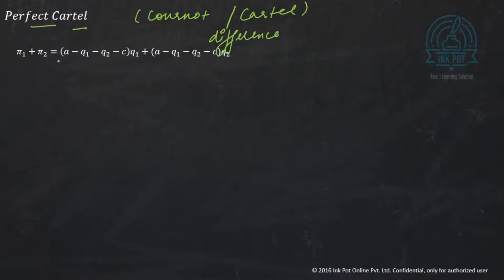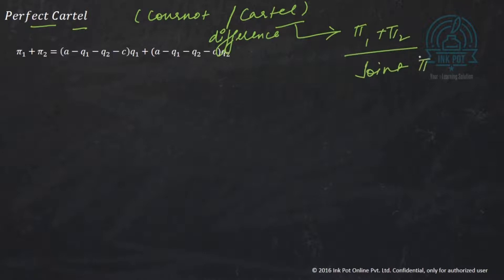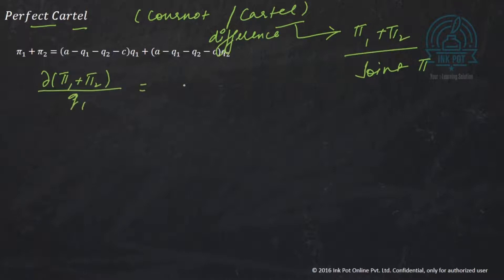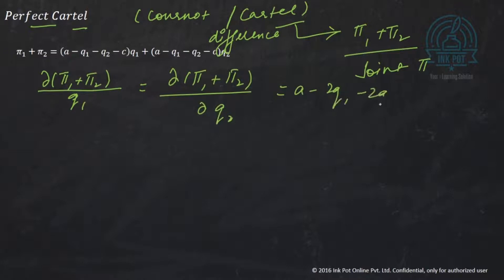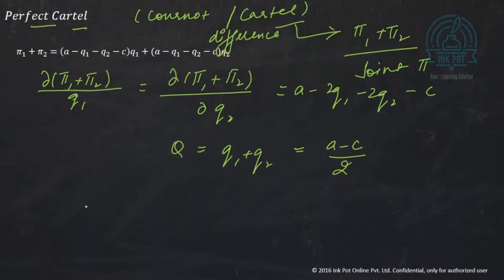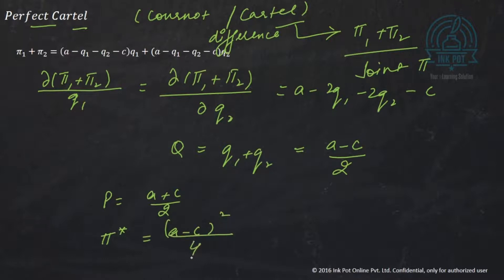For the perfect cartel, Pi1 plus Pi2 is maximized — we maximize joint profit. Taking the partial derivatives of (Pi1 plus Pi2) with respect to Q1 and with respect to Q2, each gives A minus 2Q1 minus 2Q2 minus C equals zero. Solving, the joint quantity that the two firms together produce is (A minus C) / 2, which is half the market. The price will be (A plus C) / 2, and total joint profit is (A minus C) squared / 4.